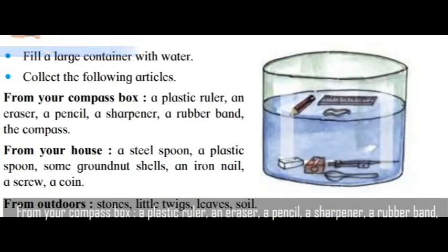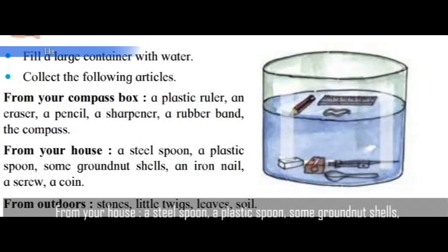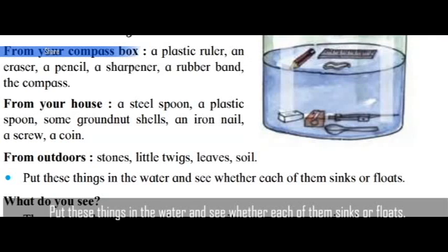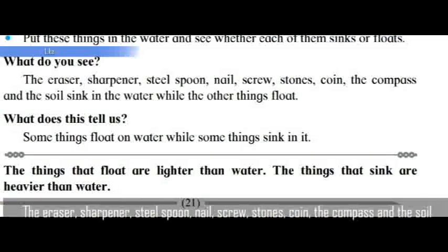Try this: fill a large container with water. Collect the following articles — from your compass box: a plastic ruler, an eraser, a pencil, a sharpener, a rubber band, the compass. From your house: a steel spoon, a plastic spoon, some groundnut shells, an iron nail, a screw, a coin. From outdoors: stones, little twigs, leaves, soil. Put these things in the water and see whether each of them sinks or floats.